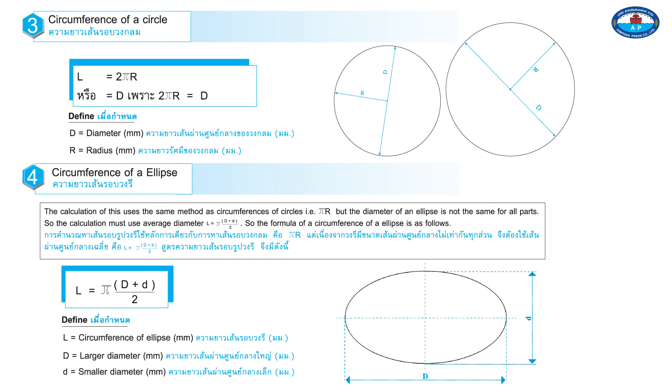Define L equals Circumference of Ellipse, D equals Larger Diameter, lowercase d equals Smaller Diameter.